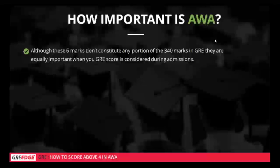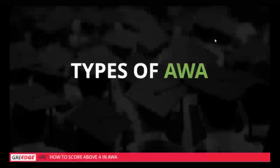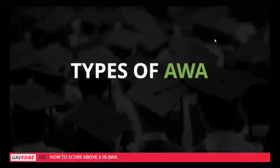There are two types of AWA. One is called the issue essay, and the other is called the argument essay. For the issue you are given 30 minutes in the GRE, and for the argument you are given 30 minutes as well. You'll be asked to write an essay on both.